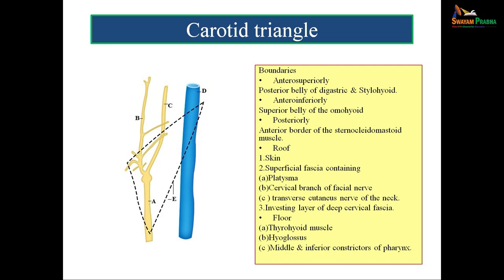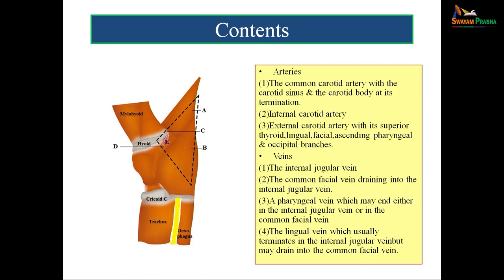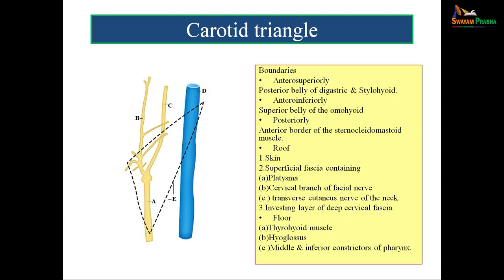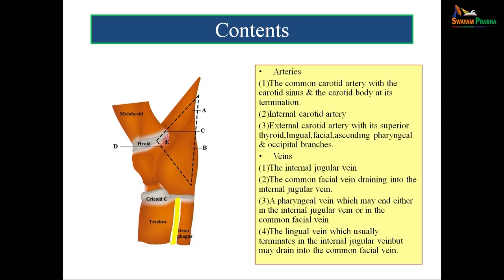The floor of the carotid triangle is formed by three muscles: thyrohyoid, hyoglossus, and the middle and inferior constrictor muscles of the pharynx. In the slide, E represents the thyrohyoid muscle, A represents the middle constrictor, and B represents the inferior constrictor muscle.